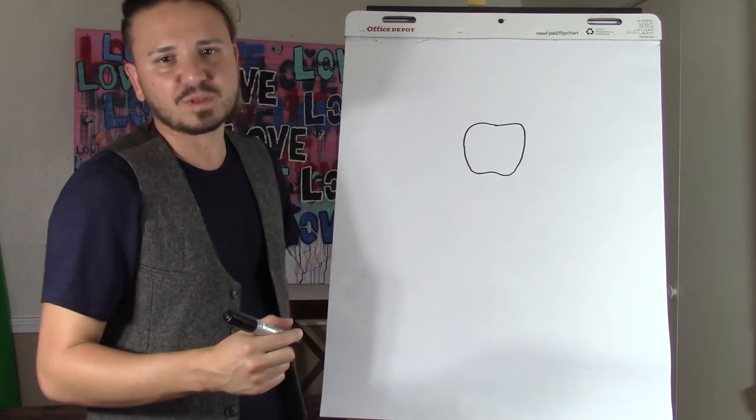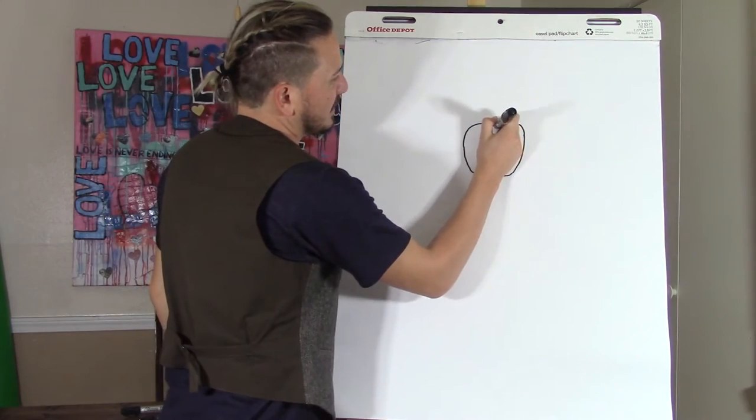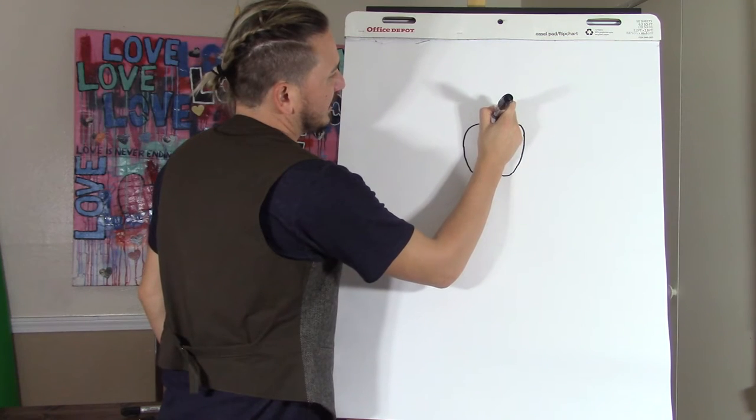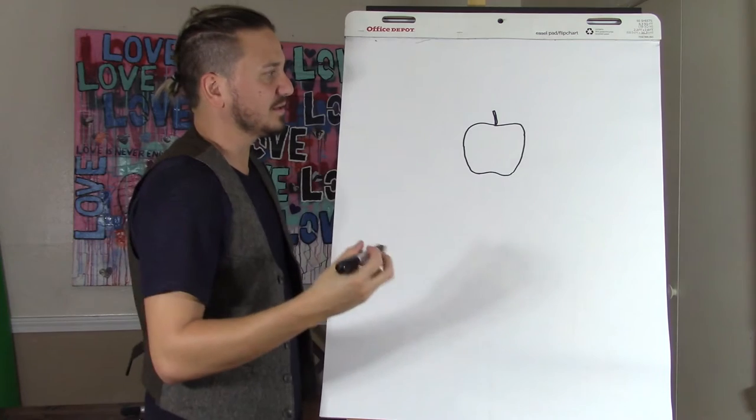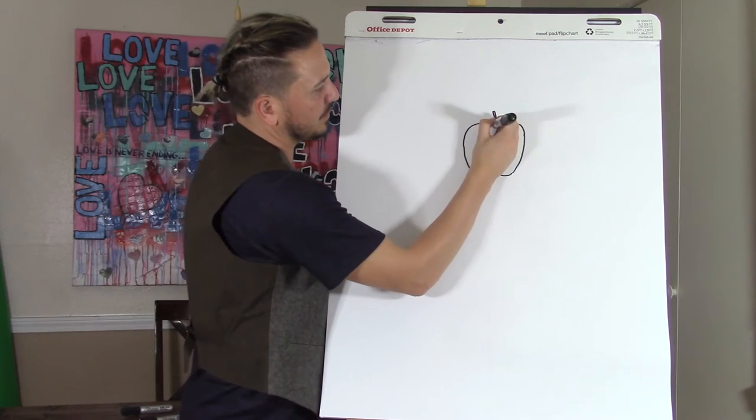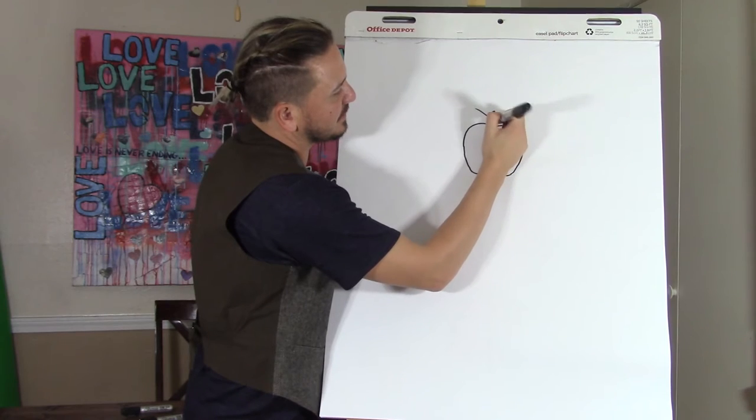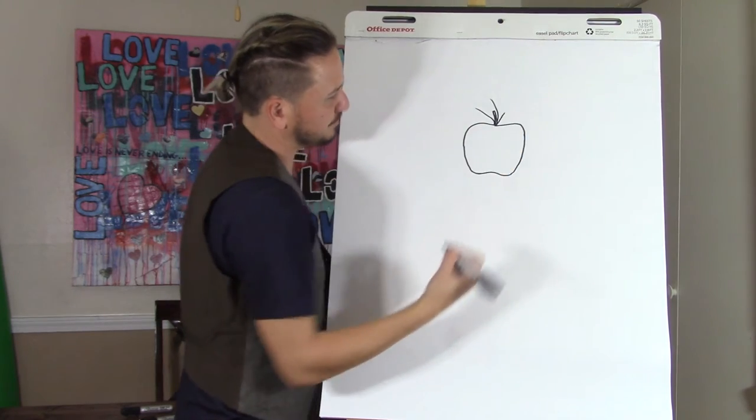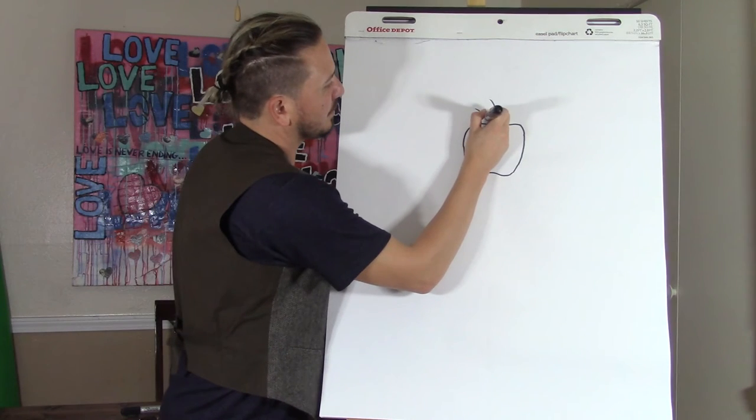So like I said, he went to school in Brussels, and like lots of artists, he became a commercial artist after the fact. So then you do the apple stem, and then we're going to do three leaves.